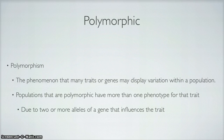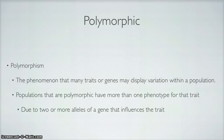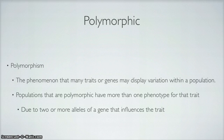What does it mean to be polymorphic? Polymorphism is the phenomenon that many traits or genes may display variation within a population. Populations that are polymorphic have more than one phenotype for a trait. For example, a flower could be red or it could be yellow — that's a phenotype — but only one gene codes for color. So you have two alleles for one gene, and it is normally due to two or more alleles that influence a single trait.